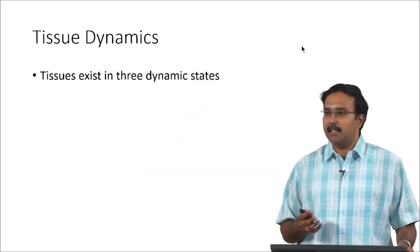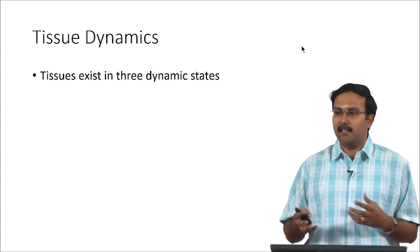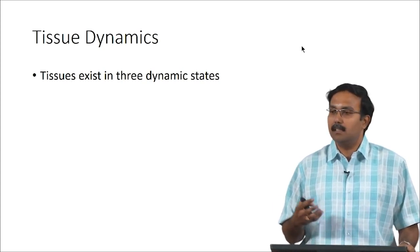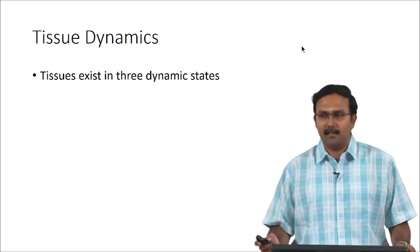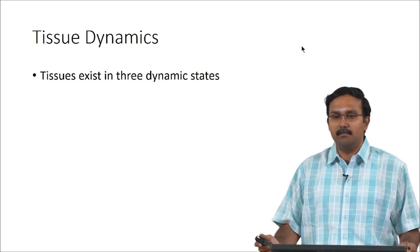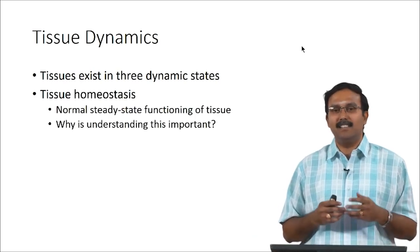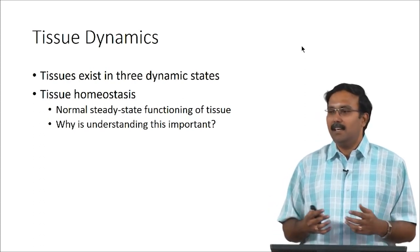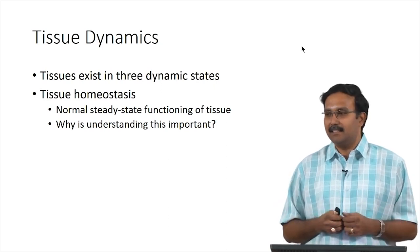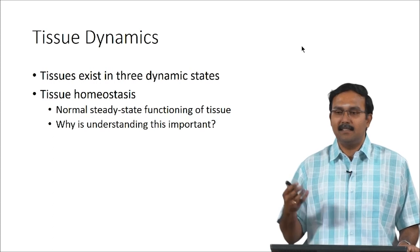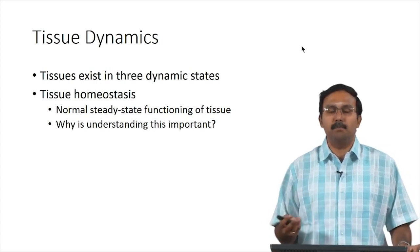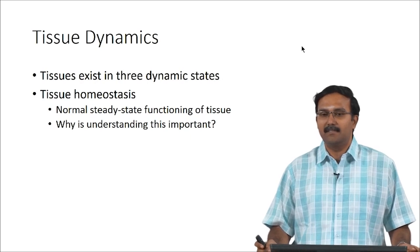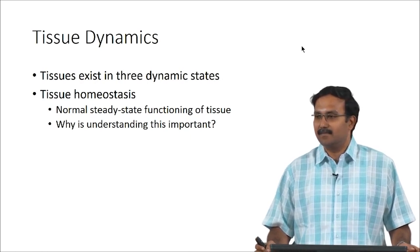Having discussed those things, let us move on to tissue dynamics. Tissues can exist in three dynamic states — they are not static. The first is homeostatic, which is when the tissue is at its normal steady-state functioning, doing what it is supposed to do. Understanding tissue homeostasis is important from a tissue engineering perspective because we generally prefer tissues to be in this condition after implantation.